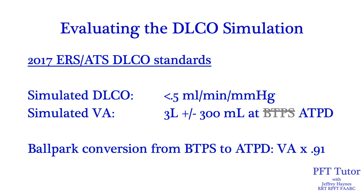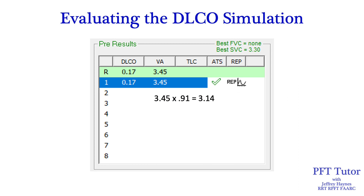You're going to run into this problem because there is an error in the ERS ATS standards. To achieve a simulated alveolar volume of 3 liters plus or minus 300 mL with a 3-liter syringe, the data will need to be reported under ambient temperature pressure dry (ATPD) conditions — remember, the gas you're using is out of a tank so it's completely dry. The ballpark conversion factor from BTPS to ATPD is 0.91. So take the alveolar volume that you've recorded and multiply it by 0.91. Multiplying the alveolar volume of 3.45 liters (BTPS) by 0.91 lowers it to 3.14 liters, which is now within the acceptable 3 liters plus or minus 300 mL range.